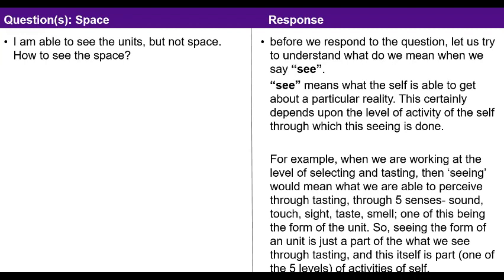The total that the self can see is through five levels of activity, of which seeing through selecting and testing is the lowest. It is certainly less than one-fifth of what we can see. When you are seeing only the form, it is one-fifth of what you can see through senses at the level of selecting and testing. So seeing the form of a unit is less than one by twenty-five of the total aspects of reality. Form is only a small part of the description of reality. When focusing on form, you are focusing on less than one-twenty-fifth of the reality.